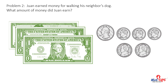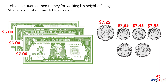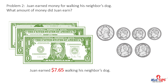Problem two. Juan earned money for walking his neighbor's dog. What amount of money did Juan earn? Count with me: five dollars, six dollars, seven dollars, seven dollars 25 cents, seven dollars 35 cents, seven dollars 45 cents, seven dollars 55 cents, seven dollars 60 cents, seven dollars 65 cents. Juan earned seven dollars and 65 cents walking his neighbor's dog.